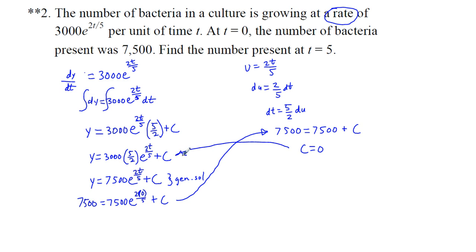I'm going to substitute that in here. So our particular solution, we have y equals 7,500 e to the 2t over 5. And now find the number present. And since c is 0, we don't even add anything else.